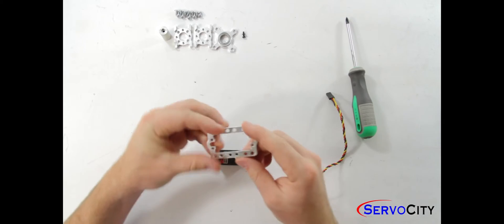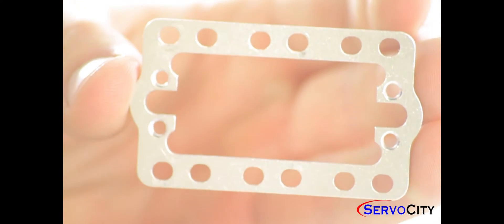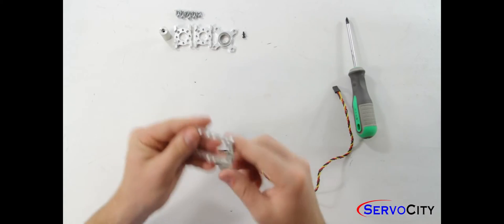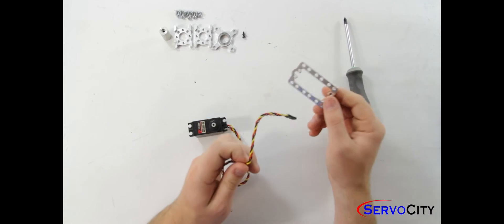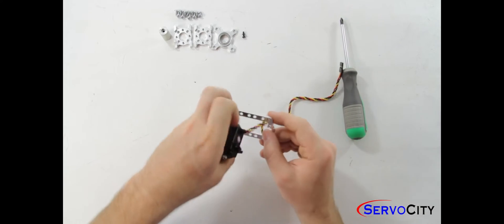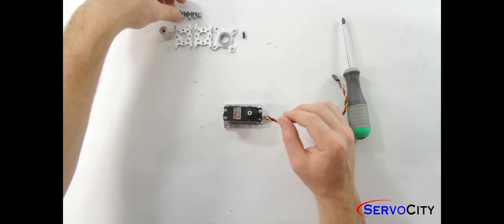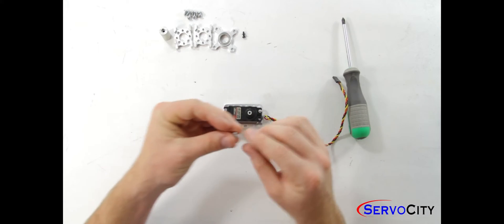Next we will take the standard servo plate A that comes in the kit. Notice that it is symmetrical so orientation is not necessarily a factor when fastening it to the servo. Feed it through the wire and through to the back so that you can attach it with the screws that come in the kit.